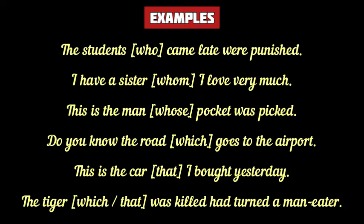Since the antecedent 'student' refers to a human, we use 'who.' The relative pronoun 'who' is the subject of the relative clause 'who came late,' modifying 'student.' In the second example, 'whom' is the relative pronoun for 'sister,' used in the objective case as the object of 'whom I love very much.' In the third example, 'whose' is in the possessive case referring to the man's pocket. In the fourth, 'which' is used for the antecedent 'road' — a non-living thing. 'That' is used for 'car,' and for the non-human antecedent 'tiger,' both 'which' and 'that' can be used.